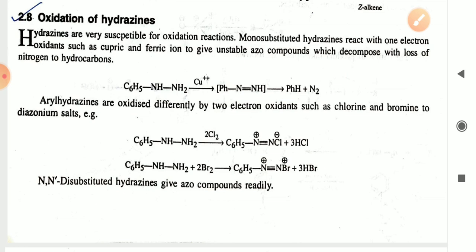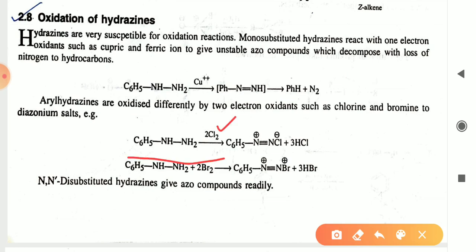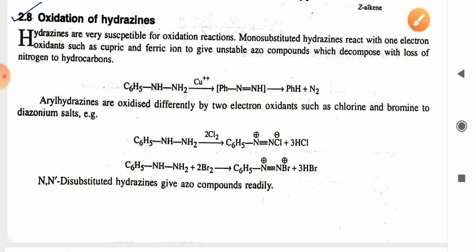Aryl hydrazines are oxidized differently by two-electron oxidants such as chlorine and bromine to give the diazonium salt. As you can see, phenyl hydrazine in the presence of two moles of chlorine gives the diazonium salt. The N≡N⁺Cl⁻ is known as the diazonium bond.